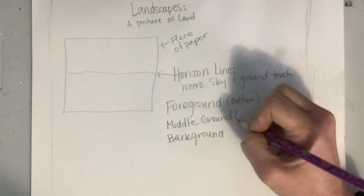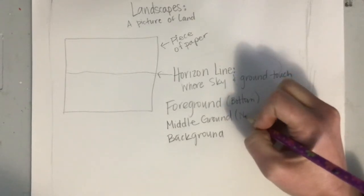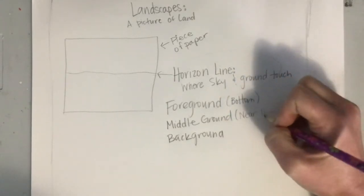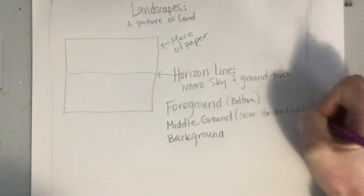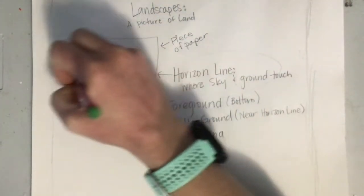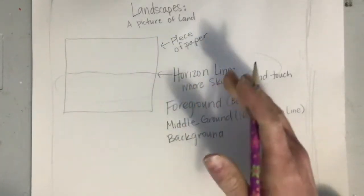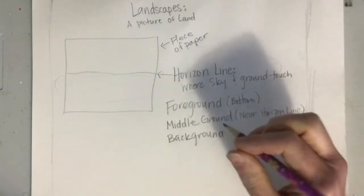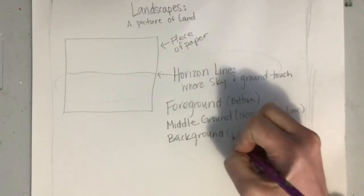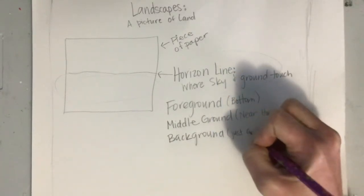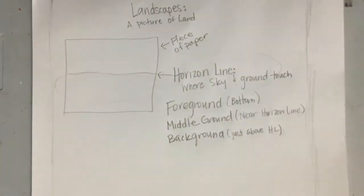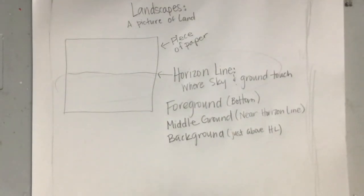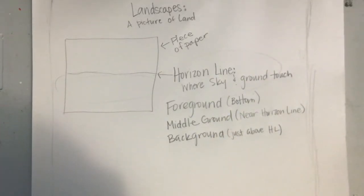The middle ground is usually near the horizon line, so when I draw I want to draw my middle ground around that area — that's where I'll add my details for things in that space. The background is usually just above the horizon line. So I'm going to draw those parts and then quickly color today and show you some options on coloring.